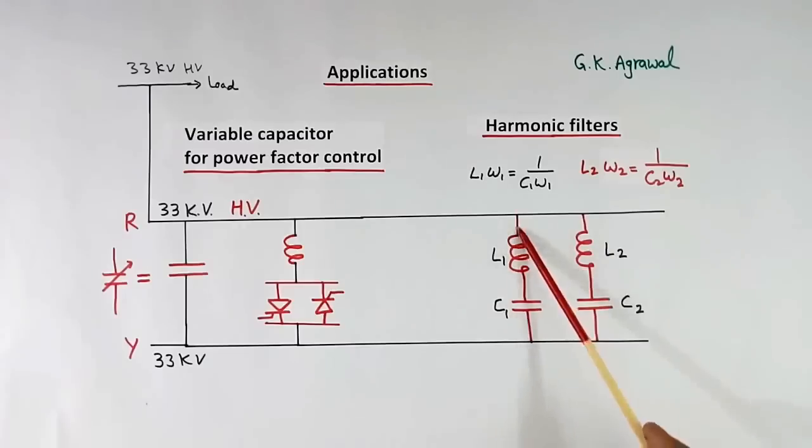say ω1, impedance of this and impedance of this becomes equal. And because they are opposite in nature, they will cancel out.